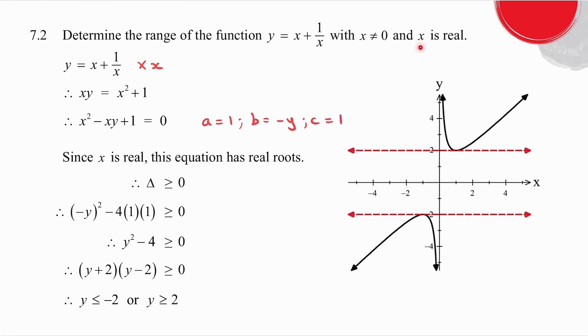Now because they told me x must be real, that means I have to have real roots. And if I have real roots, delta must be greater than or equal to 0. So b squared minus 4ac must be greater than or equal to 0.